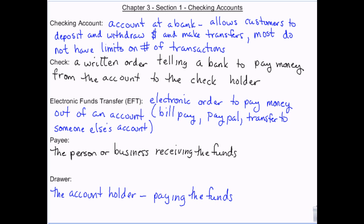A checking account, however, is meant for fluid money — for money to be going in and out. It allows you to deposit, withdraw, and make transfers. Most checking accounts do not have a limit on the number of transfers or transactions you can have in a month. Some checking accounts do, but they're rarer. Most of them are unlimited transactions.